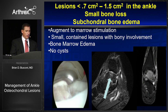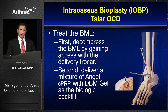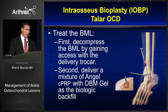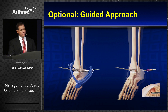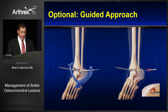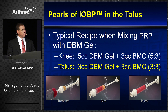For lesions 7 millimeters to 1.5 centimeters with bone marrow edema, one of the newest additions to my practice is intraosseous bioplasty, which Sam will talk about a bit later. Basically, you want to decompress the subchondral edema, then deliver a mixture of BMC with DBM gel as a biological backfill to help support that area. I use fluoroscopy to get to the subchondral lesion and like to use three cc's of DBM and three cc's of BMC as a mixture, making sure they can flow through the cannula.